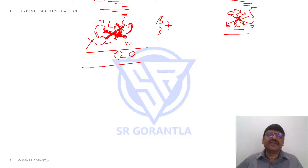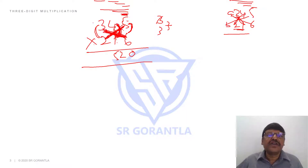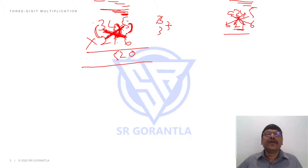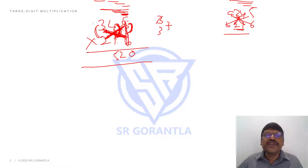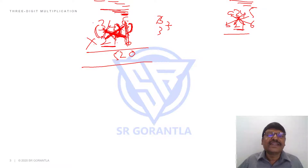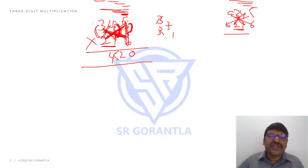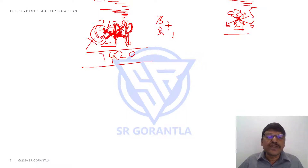Now first round is done. In the second round, start from the unit place again — but now ignore the unit place. With the two remaining places, cross multiply: 3 into 1 is 3, 4 into 2 is 8. 3 plus 8 is 11. 11 plus 3 carry is 14. Next step: ignore the second place also. What is left is only 2 into 3, which is 6. 6 plus 1 carry is 7.